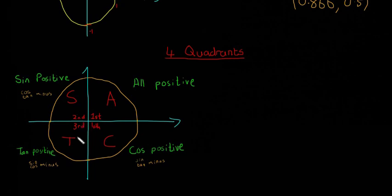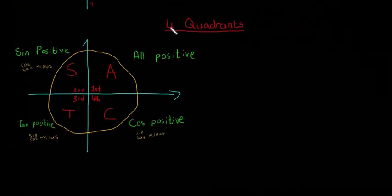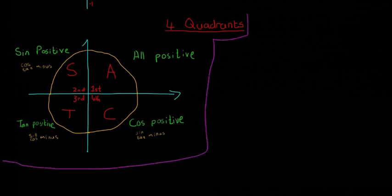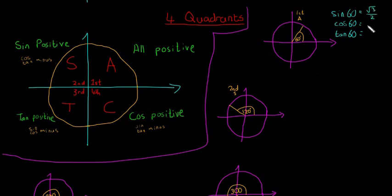So if you look at an angle in any of these quadrants, you can tell straight away if the sine, cos, or tan is going to be negative or positive just by thinking back to these four quadrants. Let me quickly draw out some examples. The first angle we have is 60 degrees, and that's in the first quadrant — in the first quadrant, all are positive. So sine of 60 is root 3 over 2, cos of 60 is a half, and tan of 60 is root 3. They're all positive, so our ASTC makes sense so far.